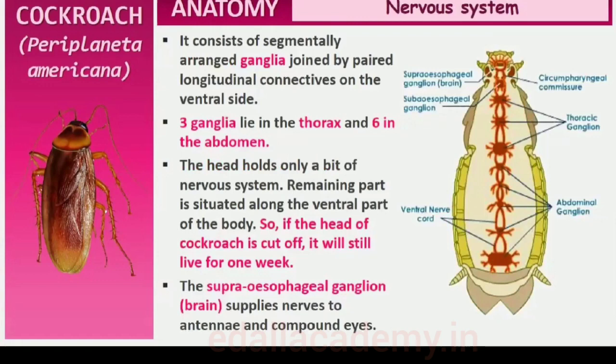The nervous system of cockroach consists of a series of fused, segmentally arranged ganglia joined by paired longitudinal connectives on the ventral side. Three ganglia lie in the thorax and six in the abdomen. The nervous system of cockroach is spread throughout the body — the head holds a part of the nervous system while the rest is situated along the ventral part of its body. So, if the head of a cockroach is cut off, it will still live for as long as one week.